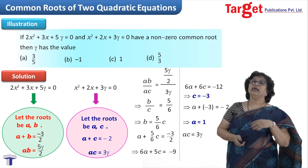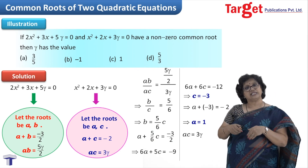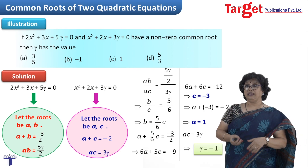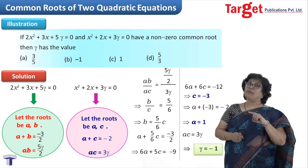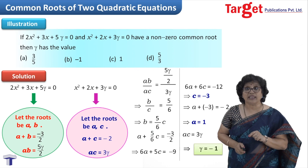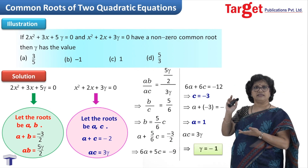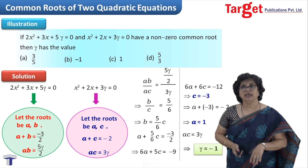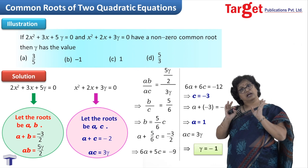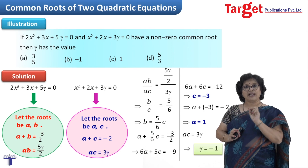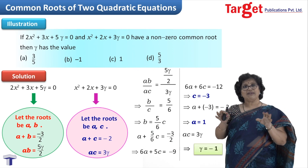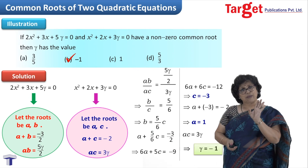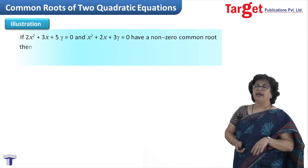Now β can be found, and substituting c = −3 into α + c = −2 gives α = 1. Using αc = 3γ, since both α and c are known, I get γ = (1)(−3)/3 = −1. Alternatively, since the common root is α = 1, substituting x = 1 into either of the original equations also gives γ = −1. The answer is γ = −1. This method uses common root α, with non-common roots β and c, then uses sum and product of roots.